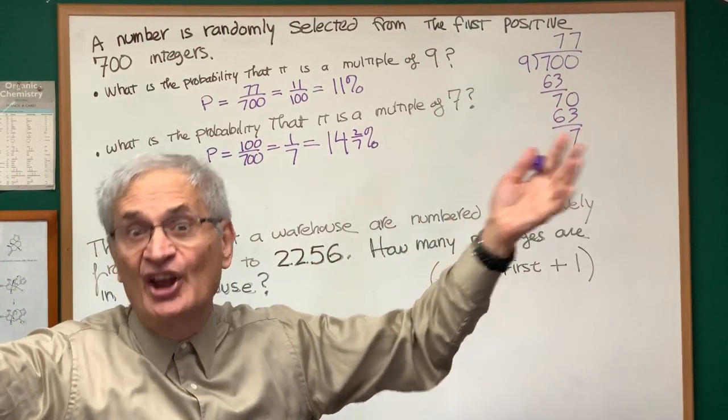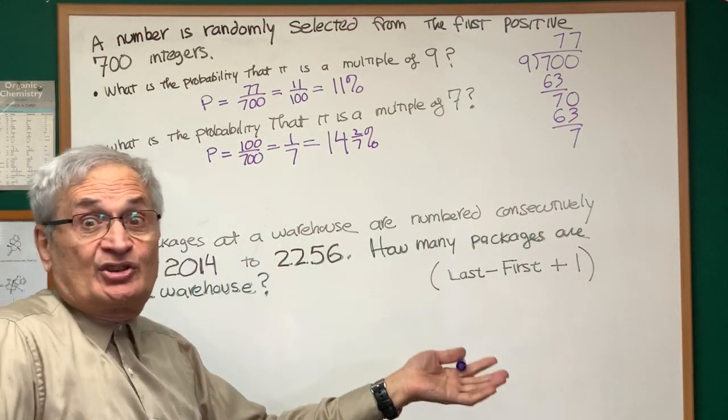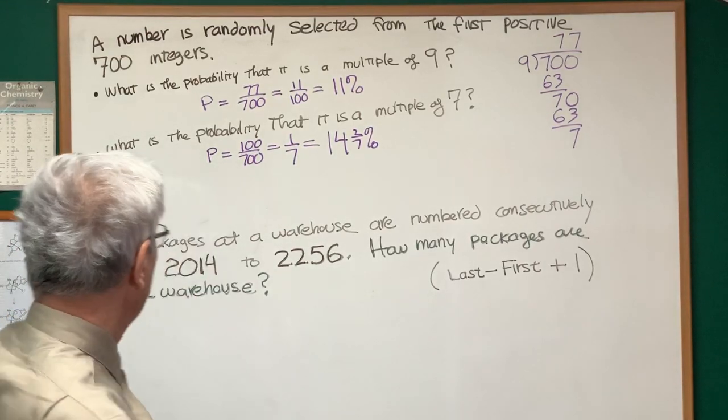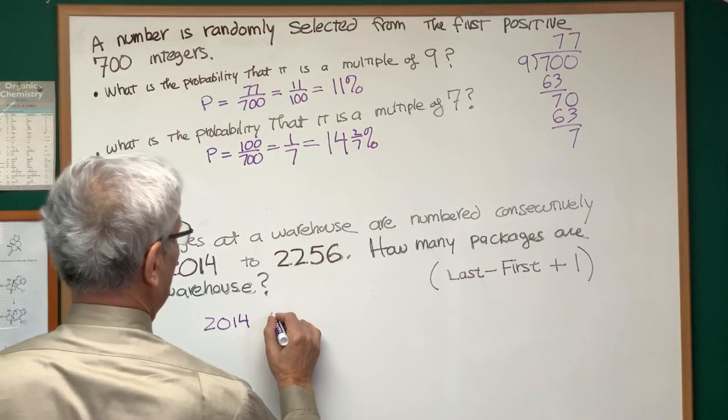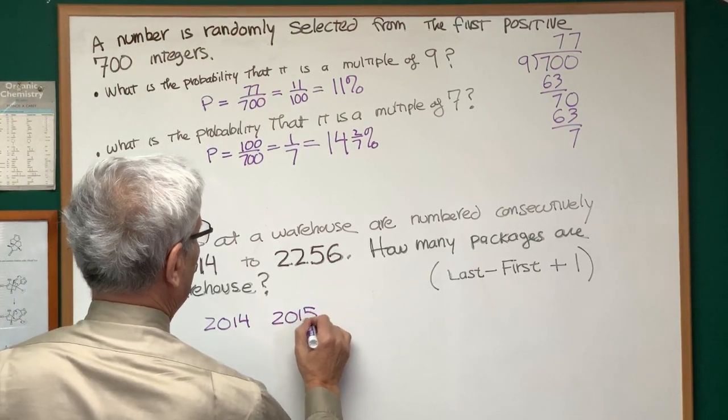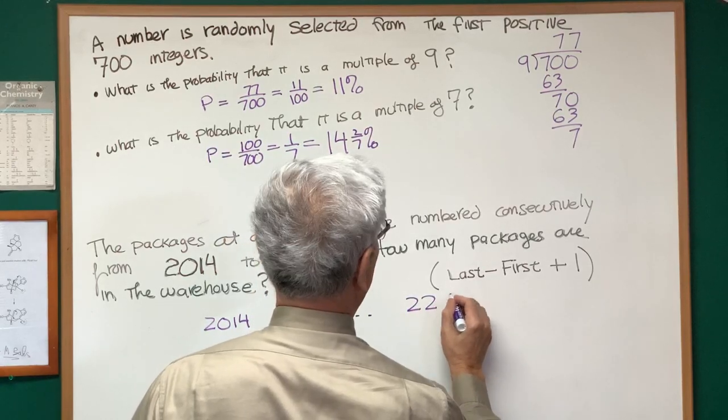All right, so another formula you have to put into your memory bank. I have a more intuitive way of doing it. You can choose either way, whichever is comfortable for you. Here's what I like to do. Let's take the first number in the sequence, 2014, 2015, all the way up to 2256.